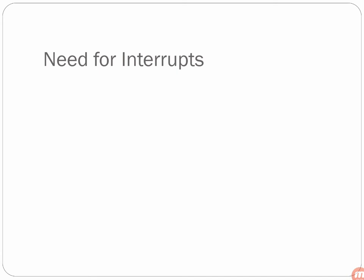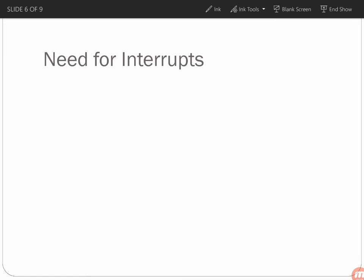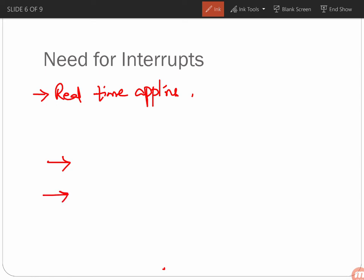Now let us understand the need for interrupts. In most real-time applications, to handle certain conditions properly, the actual task must be halted for some time. For example, when running a washing machine, after 20 minutes you want it to switch off. The actual task must be halted to take the required action and then return to the main task. For executing such programs, interrupts are necessary.